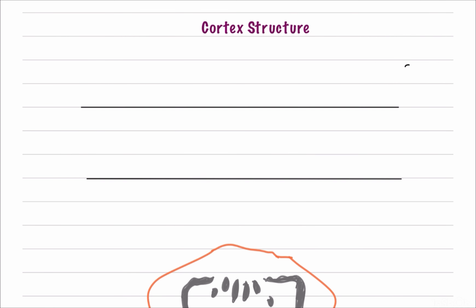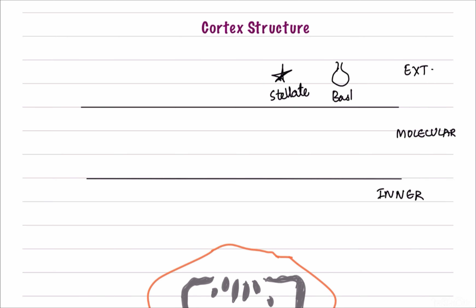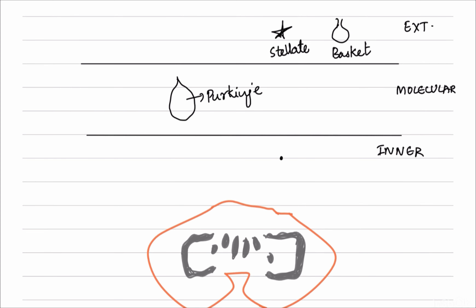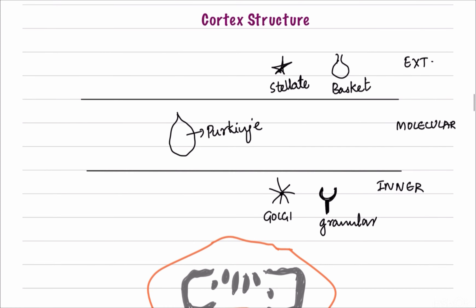The cortex has three layers. The external layer contains stellate neurons and basket cells. The middle molecular layer contains the Purkinje cells. The inner granular layer contains Golgi cells and granular cells. Functionally, except for the Golgi cells, all other neurons are inhibitory - stellate neurons, basket cells, Purkinje fibers, and granular neurons all release the inhibitory neurotransmitter GABA. Only the Golgi cells are excitatory, releasing glutamate.